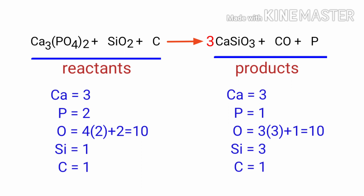Now we need to balance the silicon atoms. To do this, we need to put a coefficient of 3 in front of SiO2.